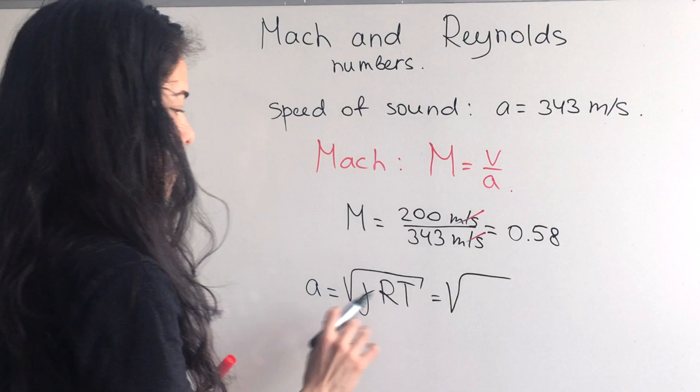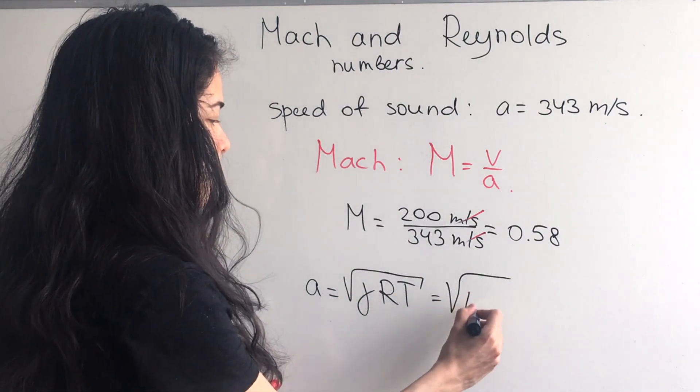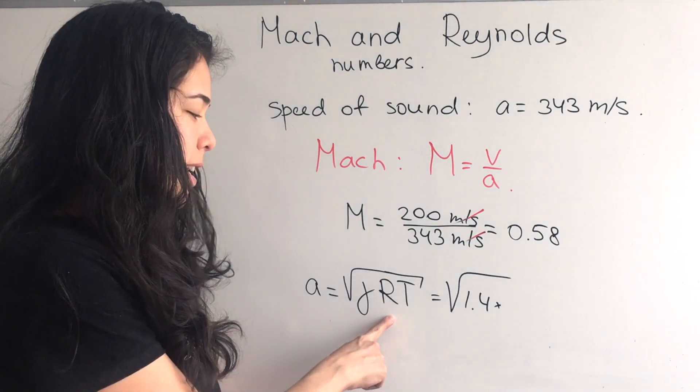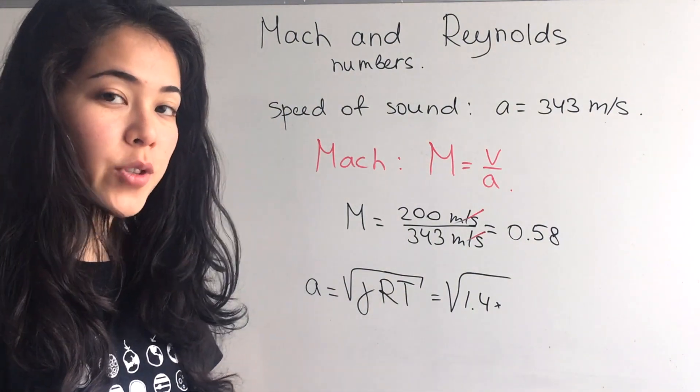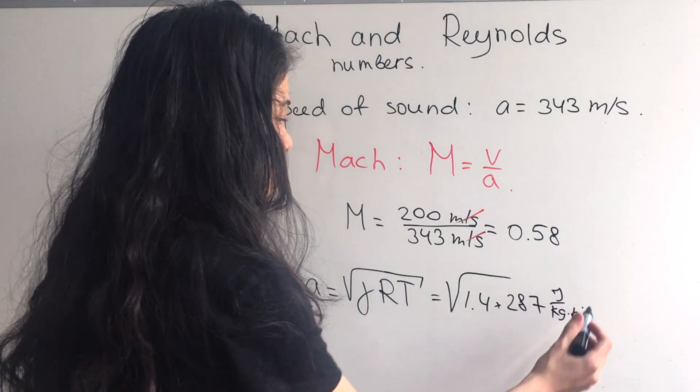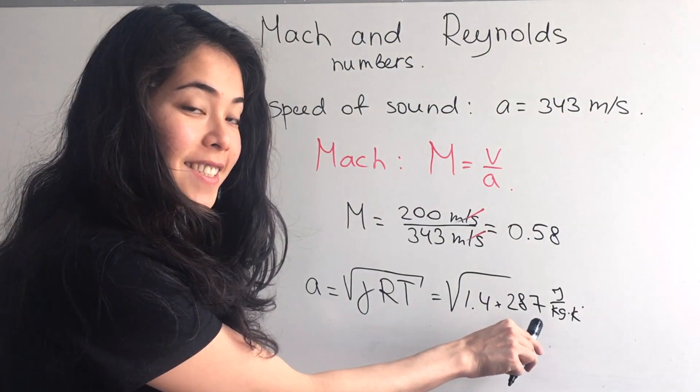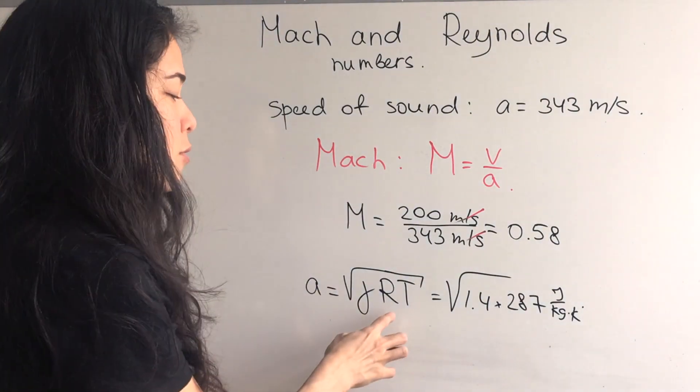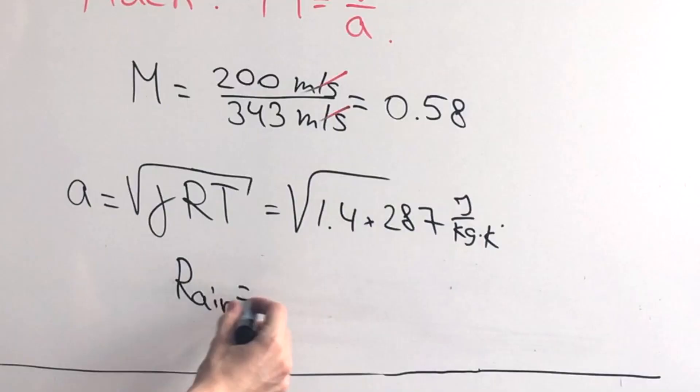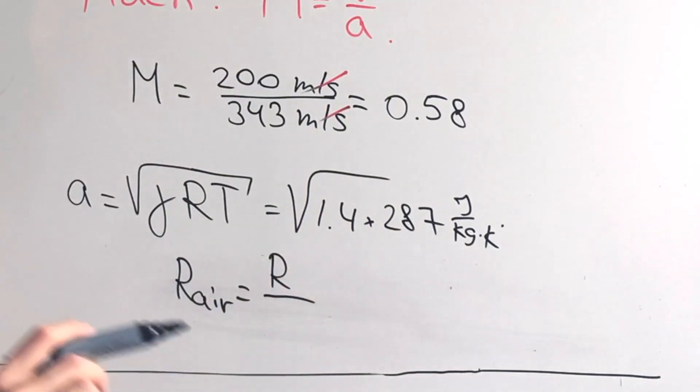In the next equation, let's plug in the values that we know. This is the gas constant for air, which will give us 287 joules per kilogram per Kelvin. In order to find the gas constant, we need to divide the universal gas constant R by the molar mass of the gas that we're interested in.